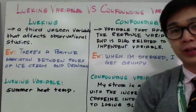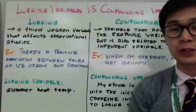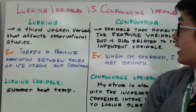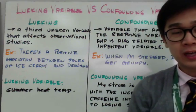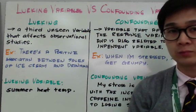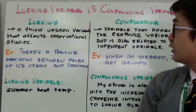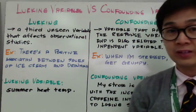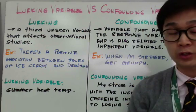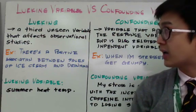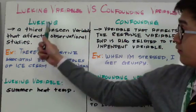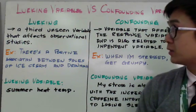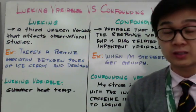There are two variables you need to watch out for when working with an experiment: lurking variables and confounding variables. Both lurking and confounding variables will have an effect on your result or experimental design. The lurking variable is a third unseen variable that affects observational studies.